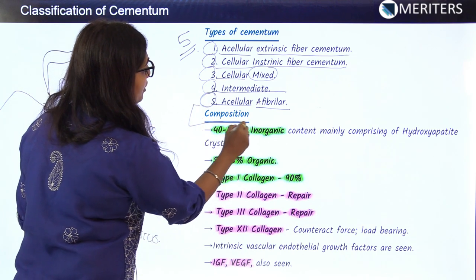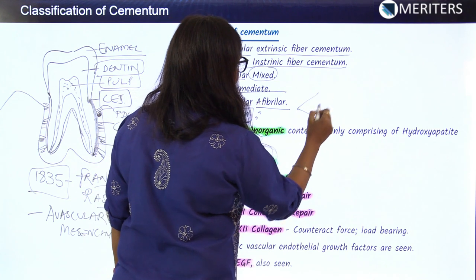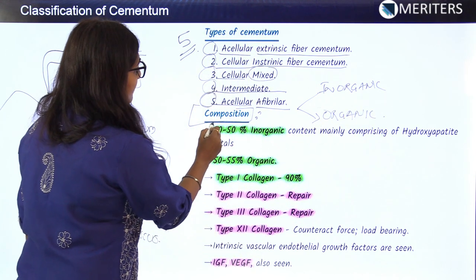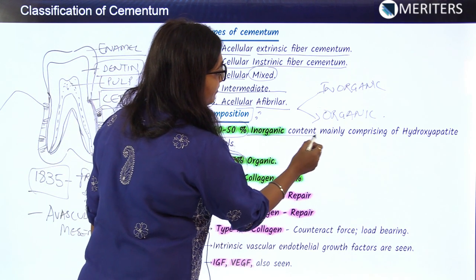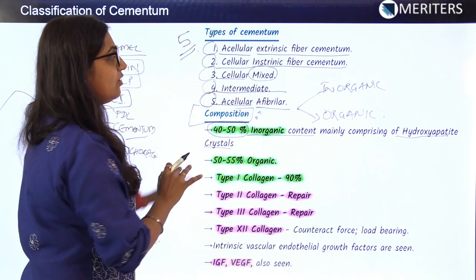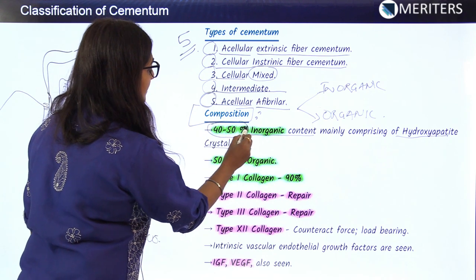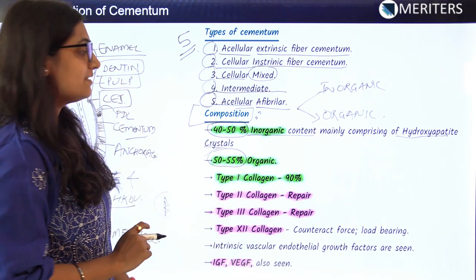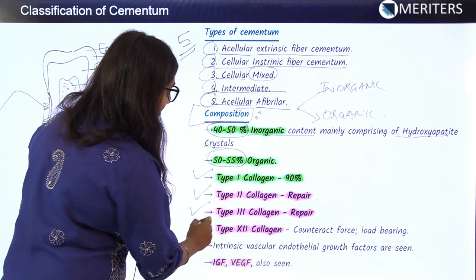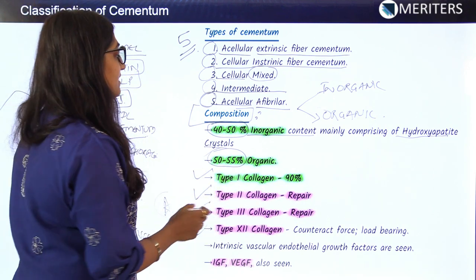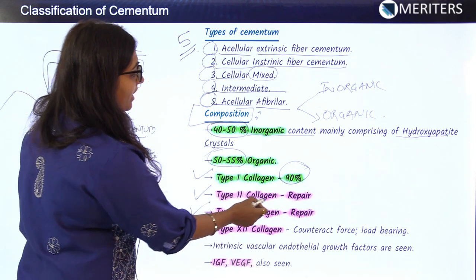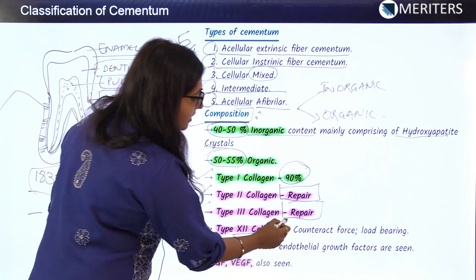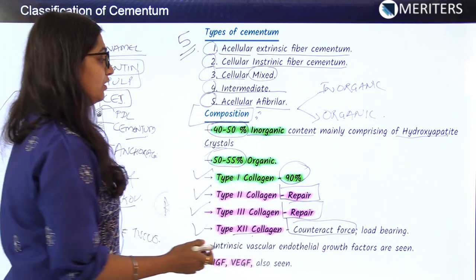Regarding composition, cementum has 40 to 50 percent inorganic content, mainly comprising hydroxyapatite crystals. The organic component forms 50 to 60 percent. Different collagens present include type 1, type 2, type 3, and type 12 collagen. Type 1 is the major collagen, forming 90 percent of the composition. Type 2 and type 3 collagens are helpful in repair. Type 12 collagen counteracts force and helps fibers perform a load-bearing function.